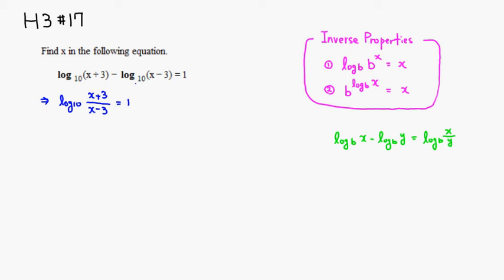Then in order to get rid of log, what we can do is we can raise 10, since base is 10, to both sides. So if you do this, 10 to the log to the base 10 of x plus 3 over x minus 3 is equal to 10 to the first power, because the right hand side is 1.